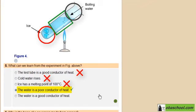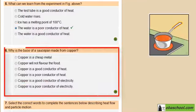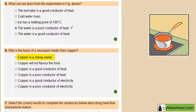And that's correct. Let's move to the second question. Why is the base of a saucepan made from copper? Is it because copper is a cheap metal?